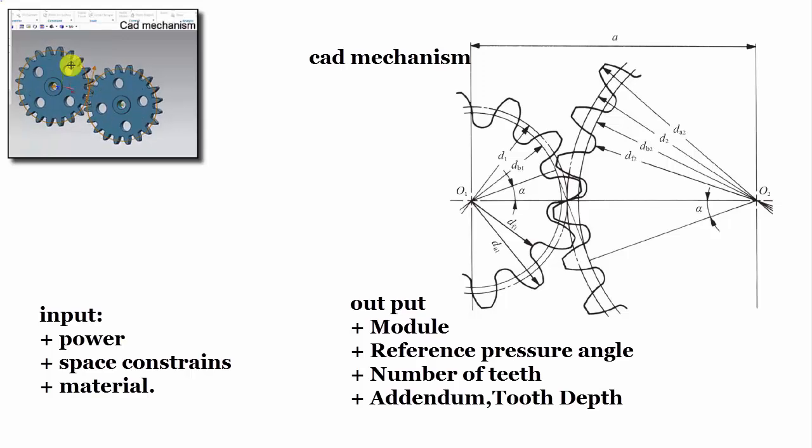This section introduces calculation methods of standard spur gears. Input: power, space constraints, material.